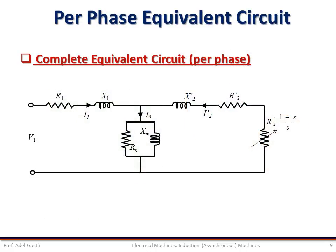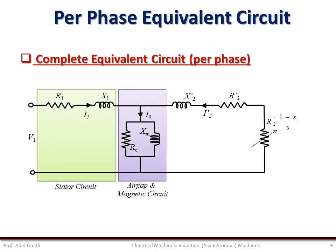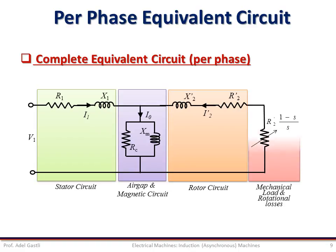In summary, the complete per-phase equivalent circuit of the induction machine comprises: the stator circuit, the air gap and magnetic coupling circuit, the rotor circuit, and the mechanical load and rotational losses. After using the per-phase equivalent circuit, all variables must be converted back to their three-phase values.